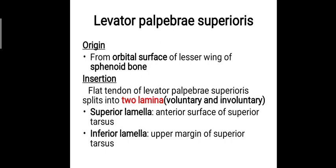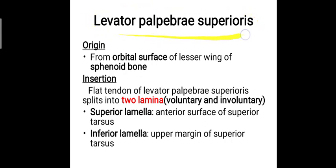The levator palpebrae superioris originates from the orbital surface of the lesser wing of the sphenoid bone. Its insertion has a peculiarity — the flat tendon divides into two laminae, one voluntary and one involuntary. The superior lamella inserts into the anterior surface of the superior tarsus, while the inferior lamella inserts into the upper margin of the superior tarsus. These insertion points are located on the upper eyelid.